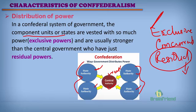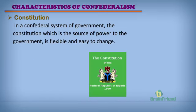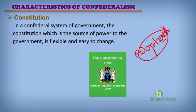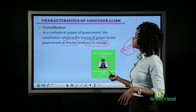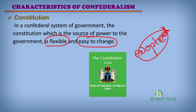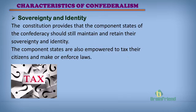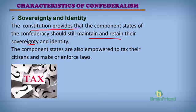Another characteristic is the constitution — the source of power for any nation to carry out its different functions. The constitution adopted in a confederal system of government is a flexible one, easy to change. We have the rigid constitution and the flexible constitution, and in the confederal system it is the flexible constitution that is adopted. The sovereignty and identity of the people are respected and retained, because the constitution provides that component states of the confederacy should maintain and retain their sovereignty and identity.